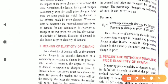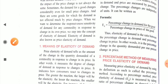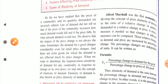Price elasticity of demand equals percentage change in quantity demanded divided by percentage change in price of the commodity. This formula represents the price elasticity of demand. Professor Alfred Marshall was the first economist to develop the concept of price elasticity of demand as the ratio of the relative change in quantity demanded to a relative change in its price.